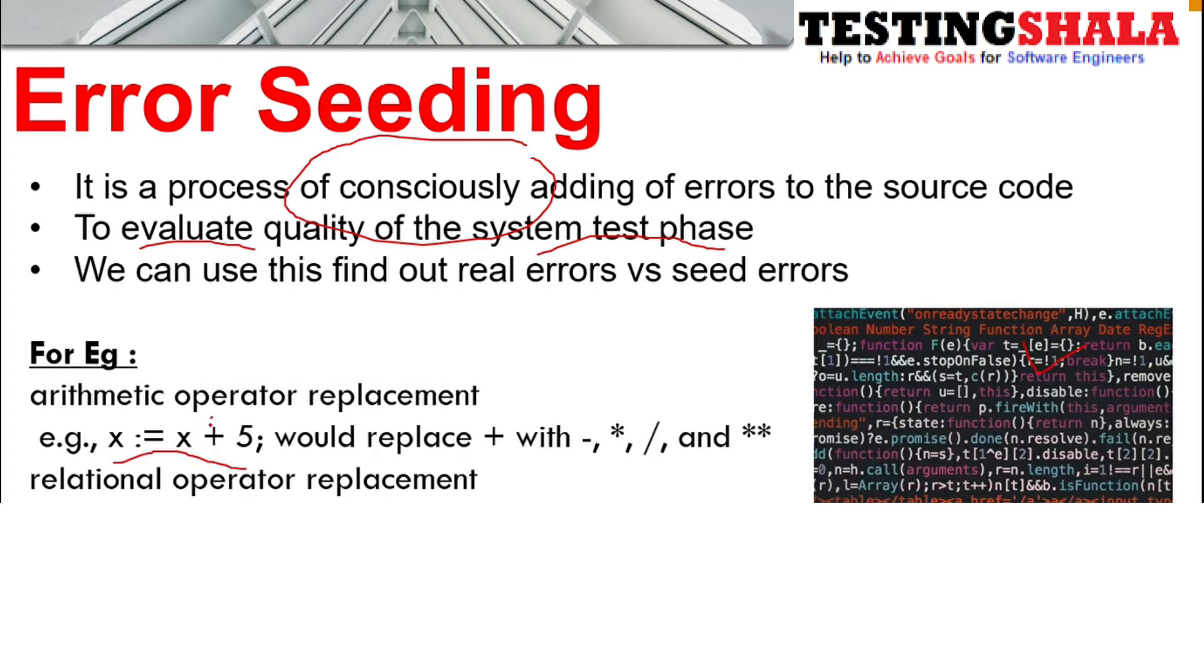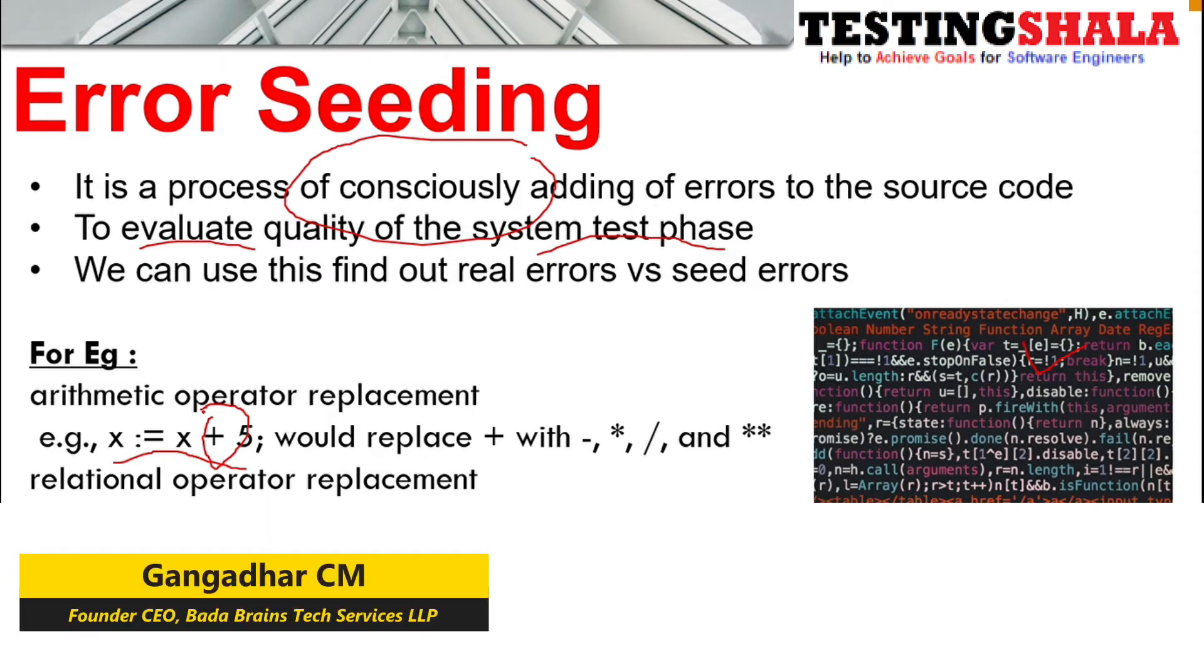For example, if in the code there's something like x equals x plus 5, then the developer can change x plus 5 to x minus 5, x times 5, x divided by 5, something like that.